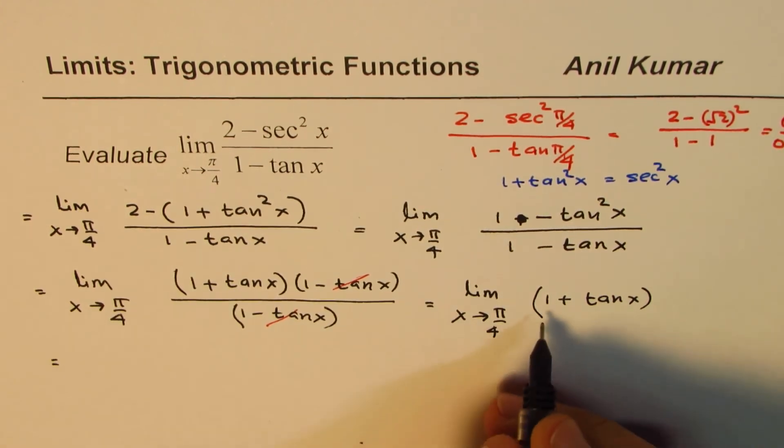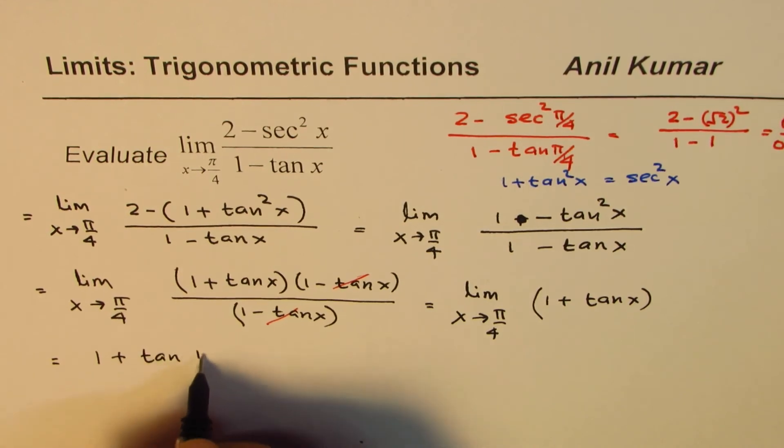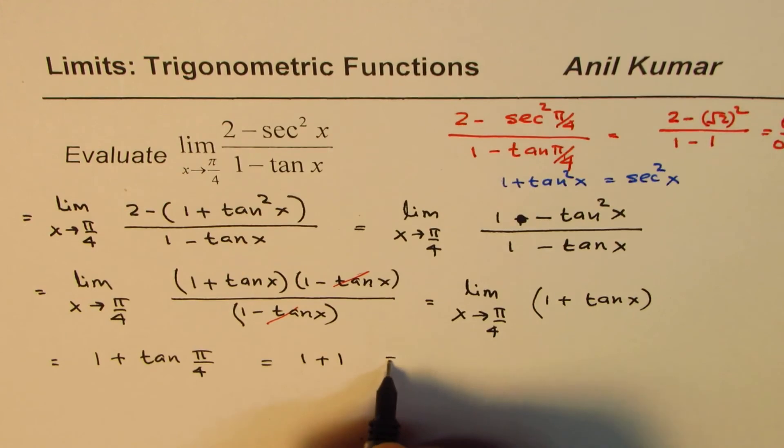Now we can find the limit by substituting x = π/4, so we get 1 + tan(π/4) = 1 + 1 = 2.